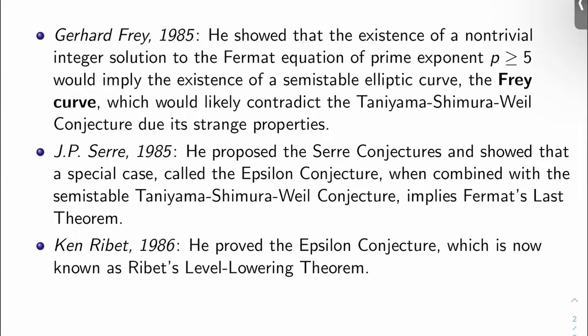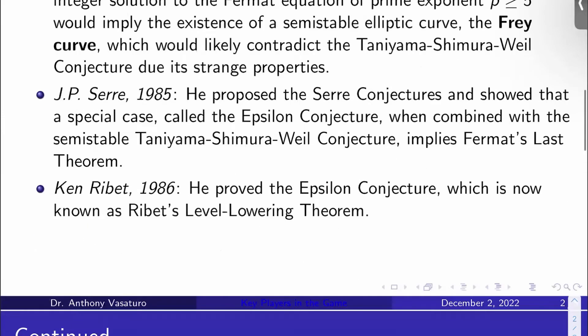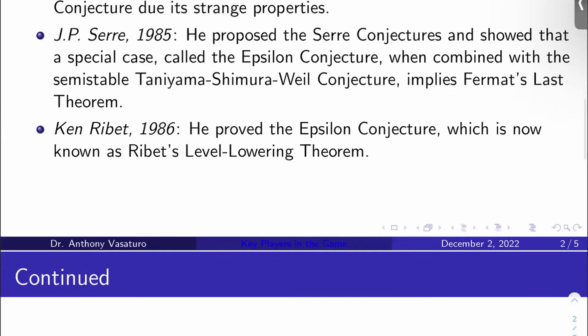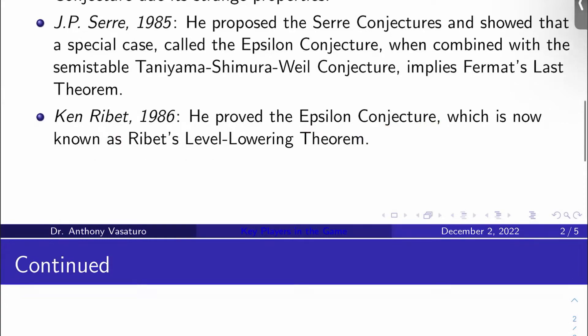The epsilon conjecture is now called Ribet's level-lowering theorem, because in 1986 Ribet proves the epsilon conjecture, making it a theorem — and that's called the level-lowering theorem.